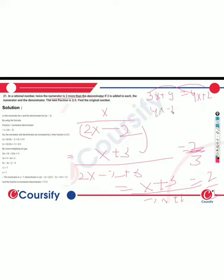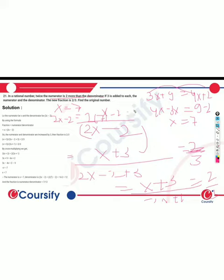So, 4x minus 3x equals 9 minus 2. So x value is 7. So the numerator is 7. The denominator is 2x minus 2, which is 2 into 7 minus 2, giving 14 minus 2 which is 12. So the fraction is 7 by 12.